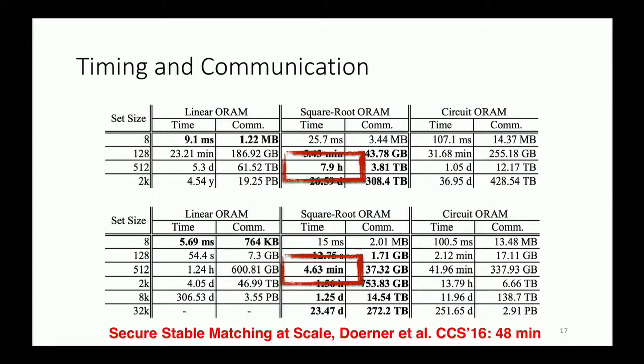Concurrent work that was published in CCS 2016 introduced oblivious linked list and they report 48 minutes execution time for same set size and scenario, which is less than our regular execution but more than our execution with ETT.